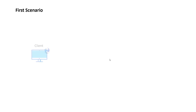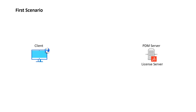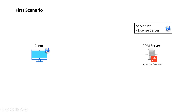The first scenario we're going to look at is the typical scenario where we have our PDM client, our PDM server, and within that server we have a license server where all our PDM licenses are stored. The license node in the administration tool is going to contain the license server — this is the name of my license server. This is the typical scenario that most of the time is the one we use.